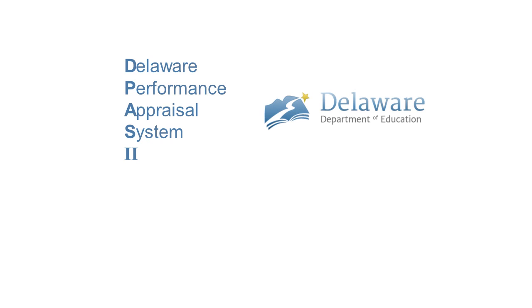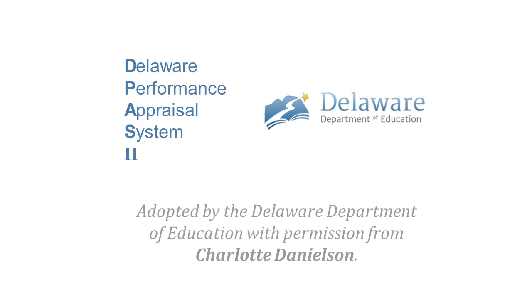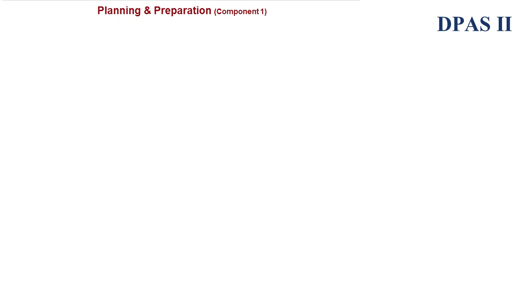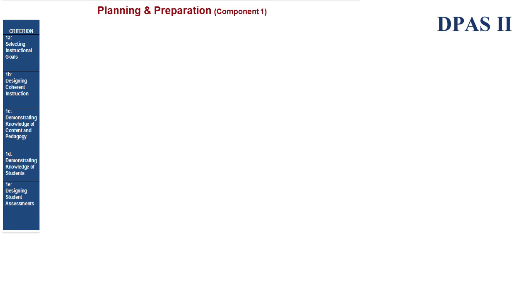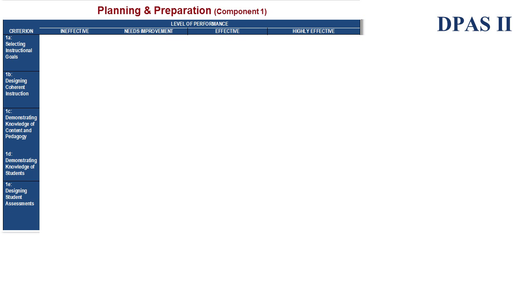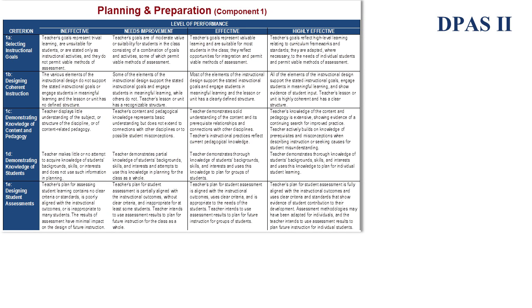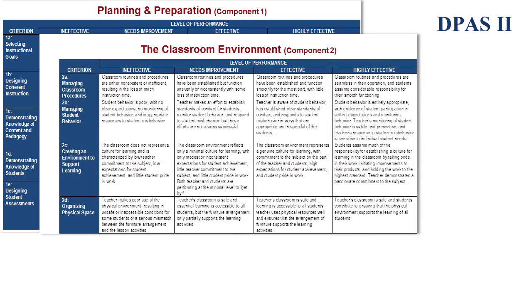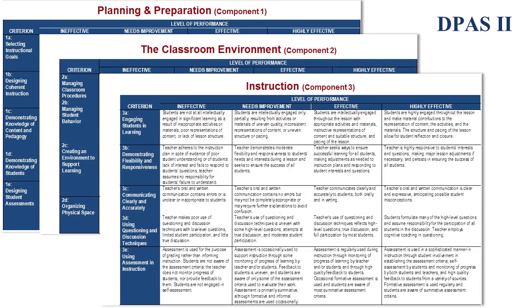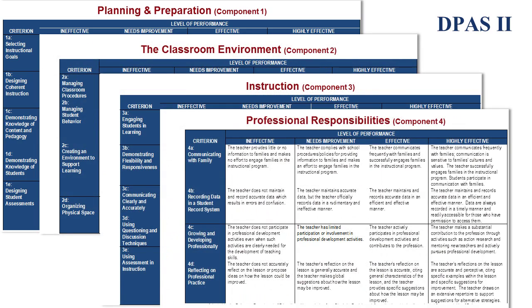One way to take a look at the impact on teacher performance is through the lens of the Delaware Performance Appraisal System, provided by the Delaware Department of Education and through the work of Charlotte Danielson. Each of the four initial components of the DPAS II rubrics has Criterion and Level of Performance. The four components include Planning and Preparation, The Classroom Environment, Instruction, and Professional Responsibilities.